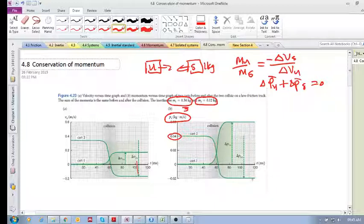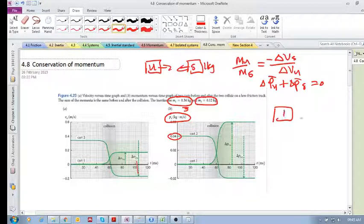So if you had cart 1 and cart 2, they came at each other and they collided, and then they started moving away from each other.